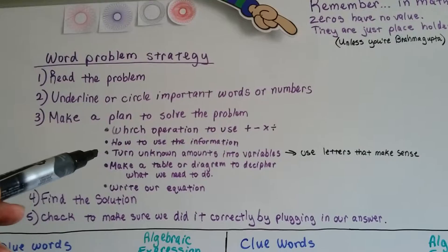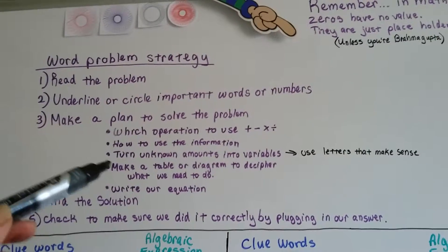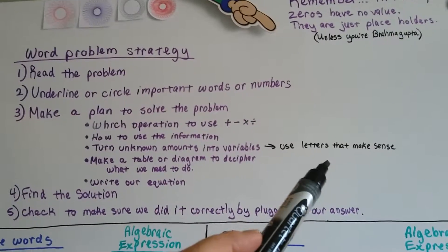We're going to figure out how we're going to use the information. We're going to turn any unknown amounts into variables, and we're going to use letters that make sense.